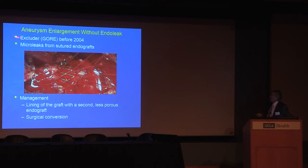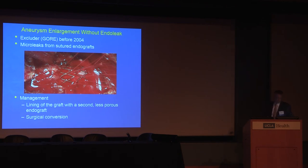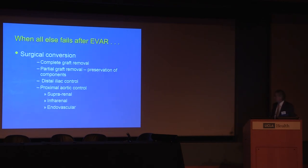When you get a sprinkler issue, the management is to line the graft with a second Endologix endograft or surgical conversion. This used to happen with the Excluder before 2004. If you see a patient with an Excluder placed before 2004 with an enlarging aneurysm but no evidence of endoleak, that is seepage of serum through the original device — corrected in 2004.